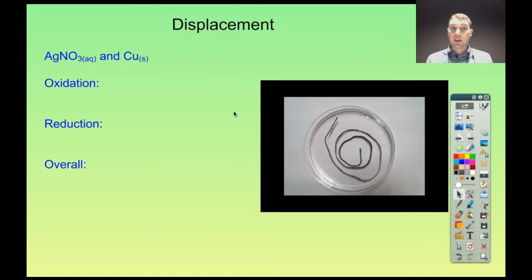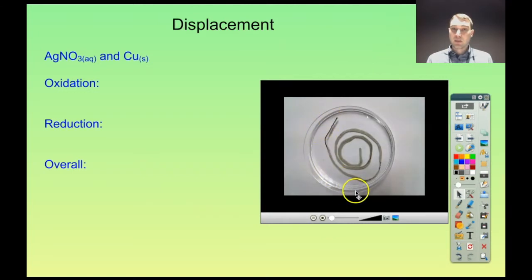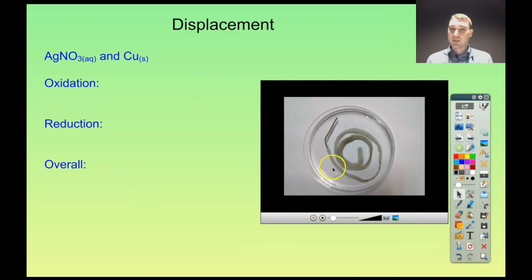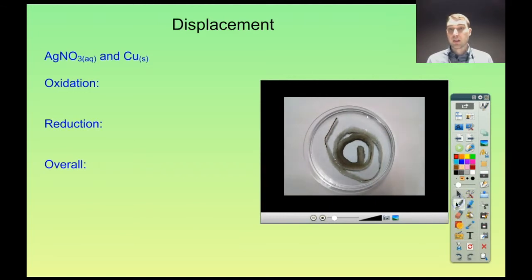So another example is copper being put in silver nitrate solution. We can see it down here — some copper wire, which is the brown, is put into a colorless solution of silver nitrate. And we can see as the reaction progresses, we get these crystals of silver forming on the copper wire. So let's have a look at what the reaction is. We'll also see a color change over time of the solution, so keep an eye out for that.